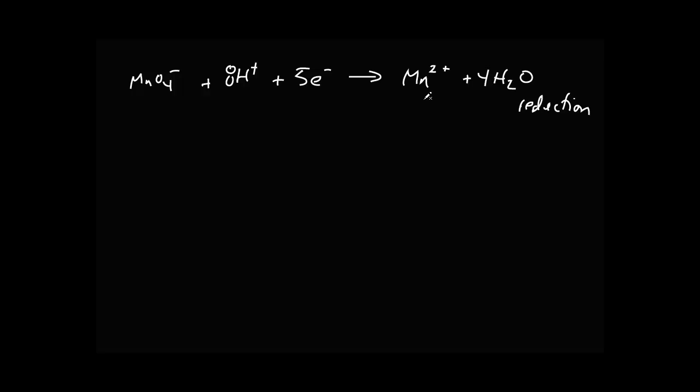Well, how did I know that it was reduced to 2+? Well, that was given to us. And if you know that in the permanganate, if oxygen is -2, -2 times 4 is -8, and the overall charge is -1, well this has to be +7. That's why I need five electrons to get the 2+.